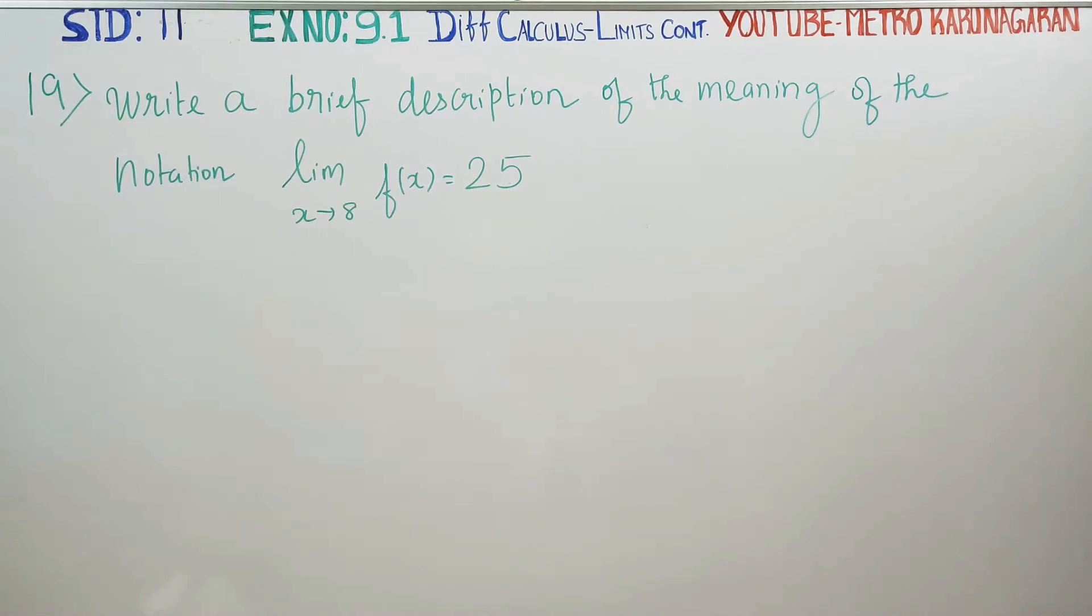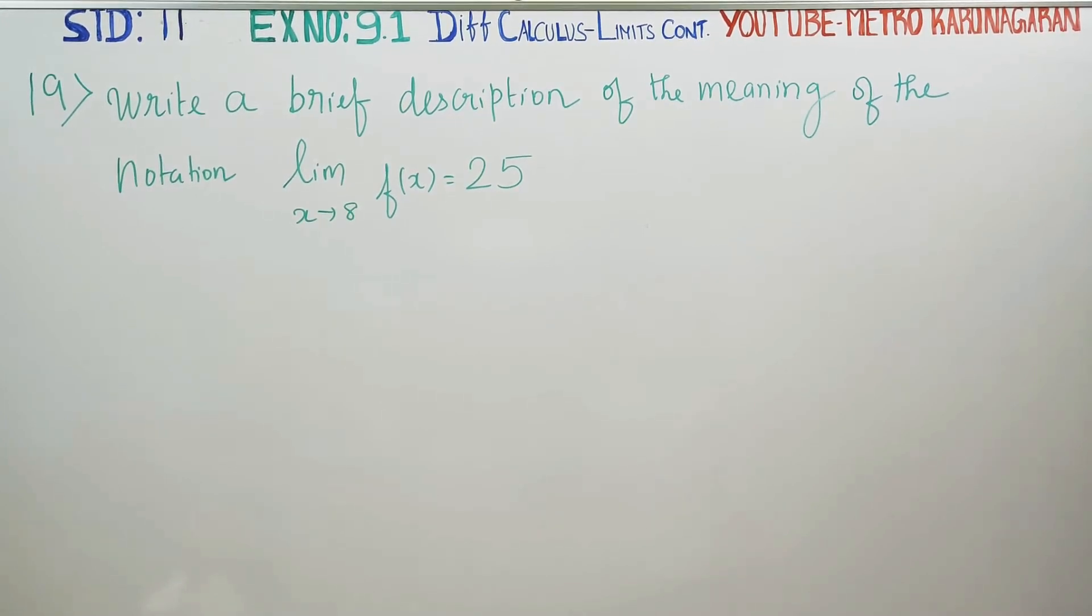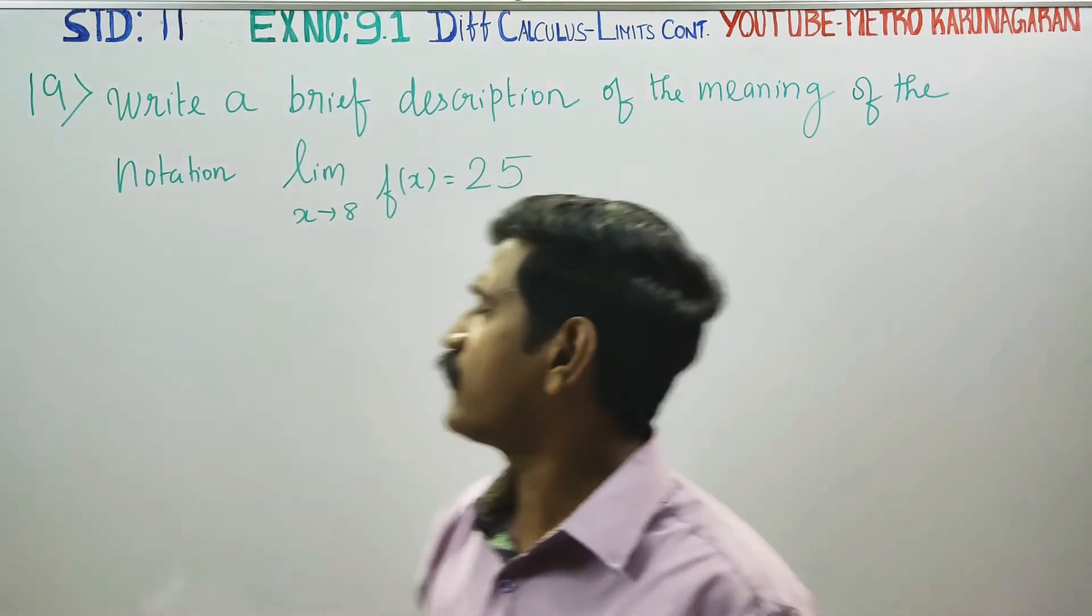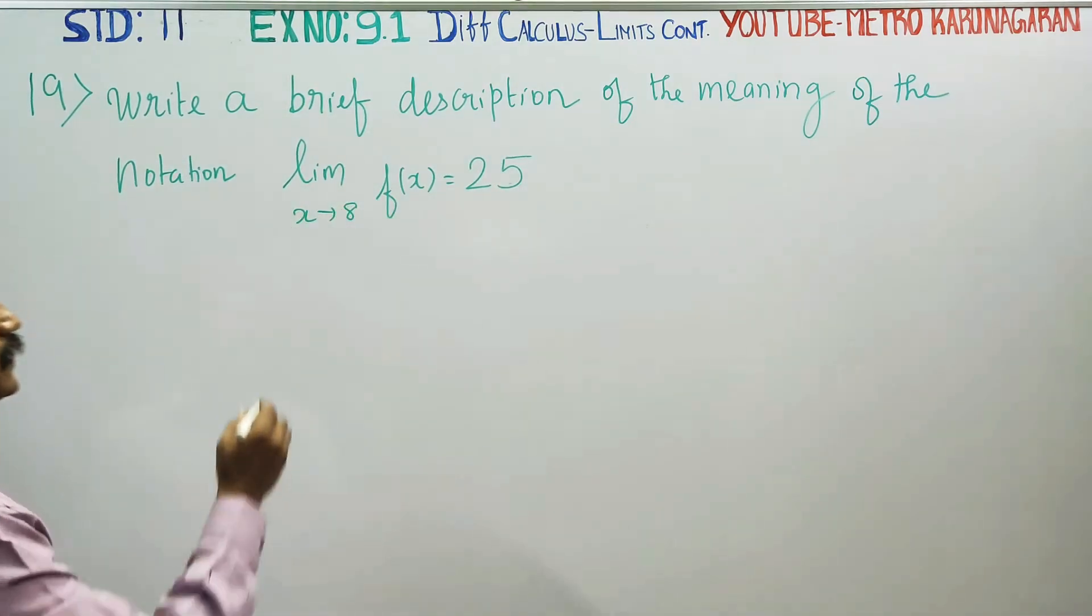Dear Learn Standard Students, in exercise number 9.1, sum number 19, write a brief description of the meaning of limit x turns to 8, f of x is equal to 25. What does this mean?